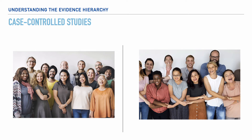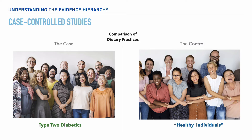As we move up the hierarchy, we'll come across case-controlled studies. These studies involve comparing a group of individuals who have a particular condition — called the case — to those who do not have the condition — called the control. For example, we could compare a group of individuals diagnosed with type 2 diabetes to a group of relatively healthy individuals with no medical illnesses, looking at a comparison of their dietary practices. However, the challenge is establishing when and for how long these groups may have differed, making it difficult to prove that diet is the sole cause of their current health status.